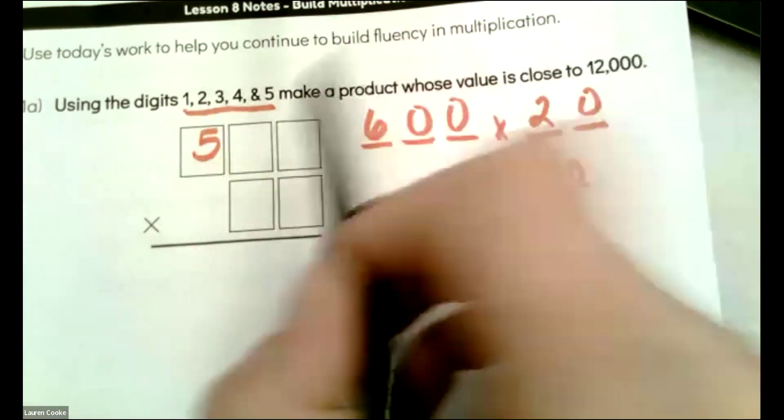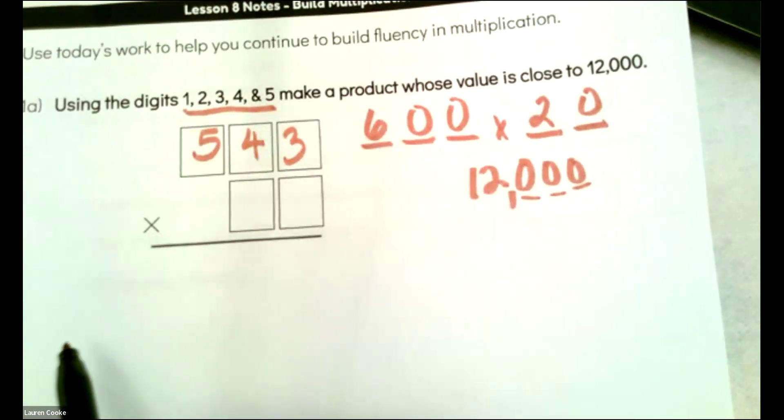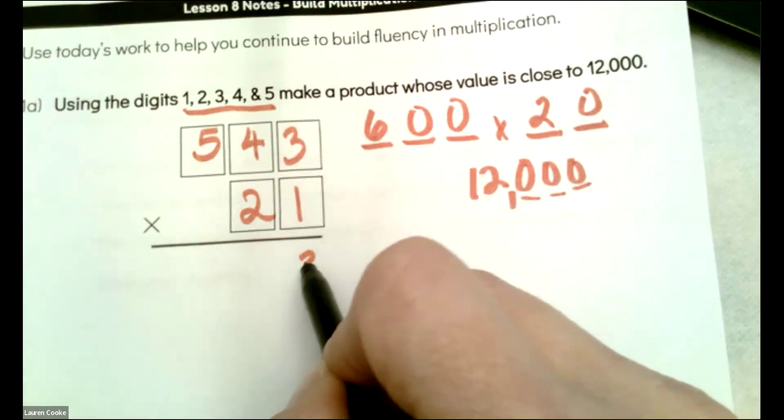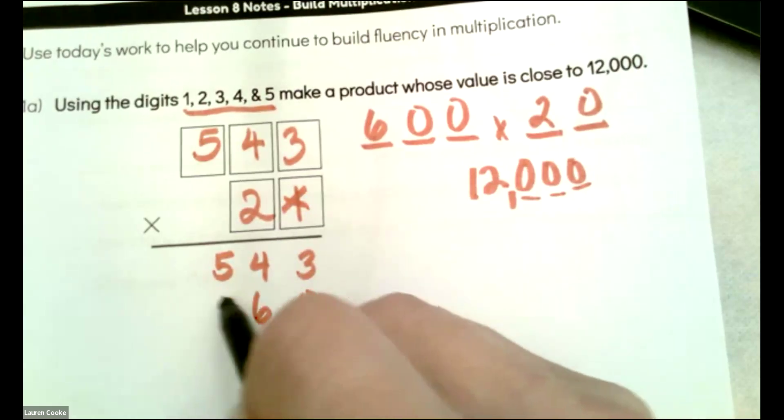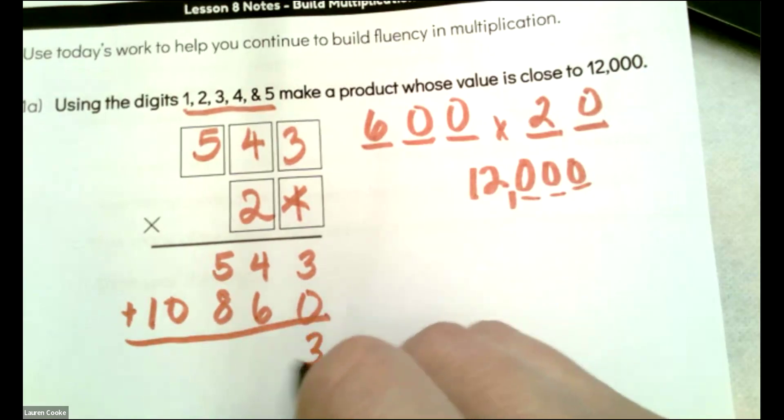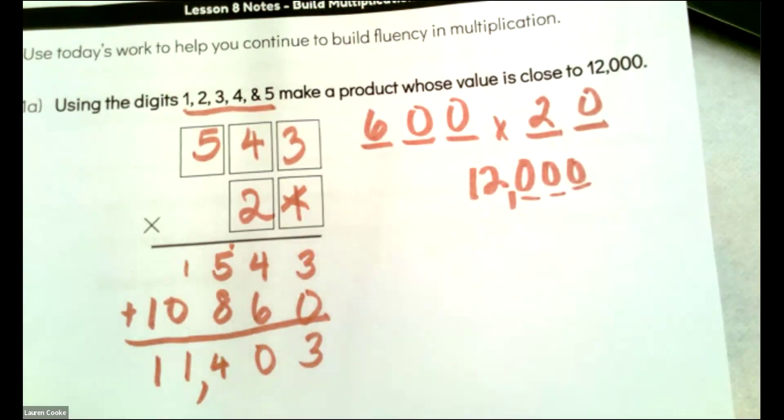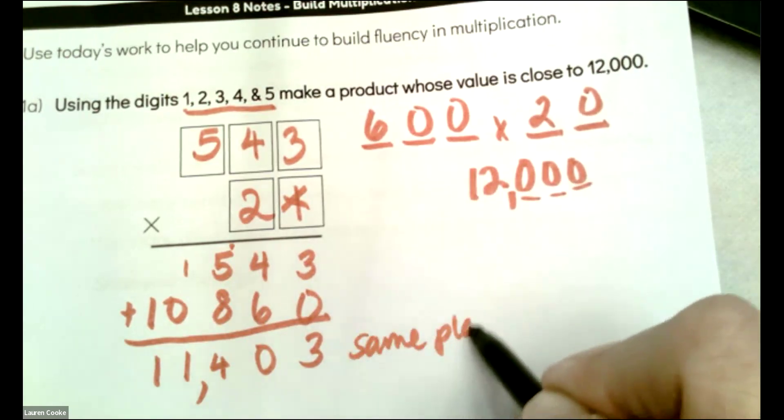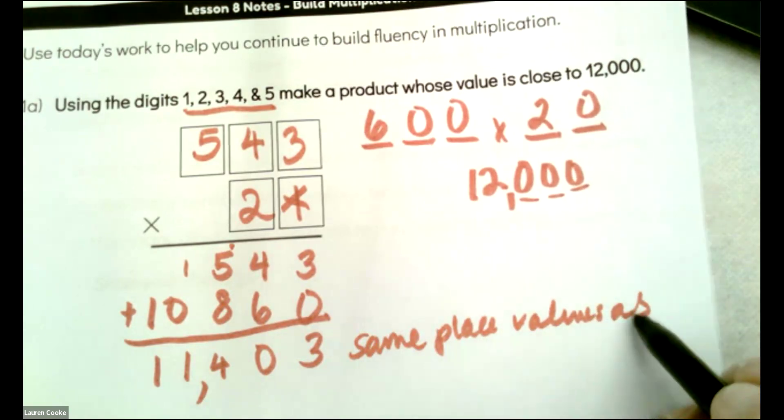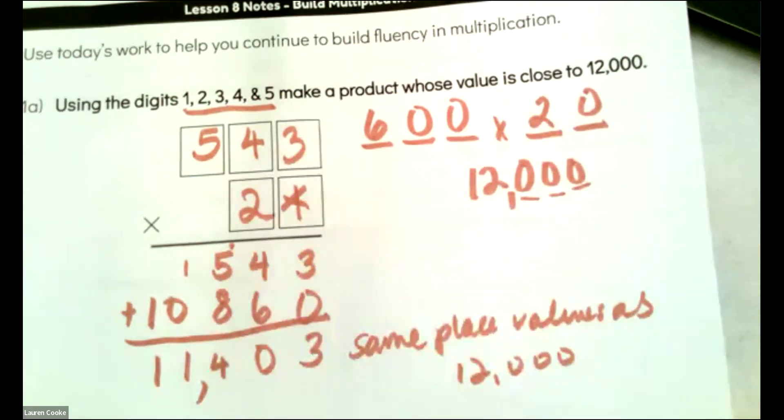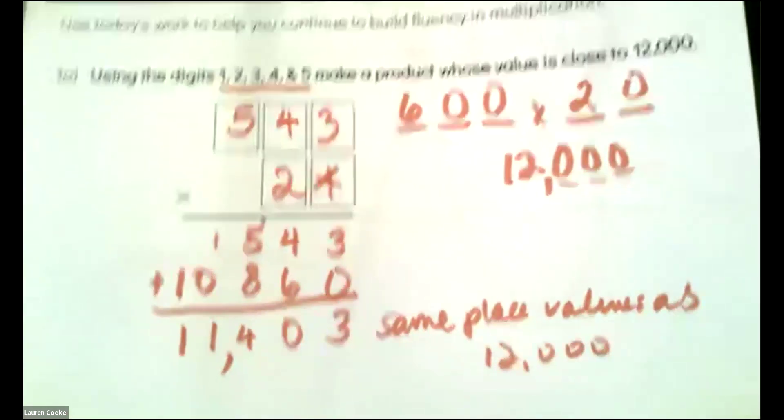Well, I could do five, four, three. That's the biggest possible number there. And then 21. Yeah. I guess that works. Okay. Three, four, five, one, times one, zero, six, eight, 10, three, 10, 14, one. Nice. I got to 11,403. Same place values as 12,000. And I don't have any bigger number to fit in the 500. So that's it. We did a good job.